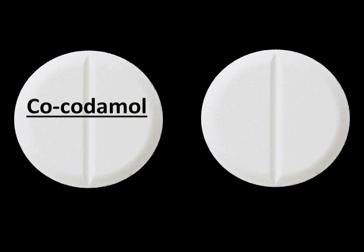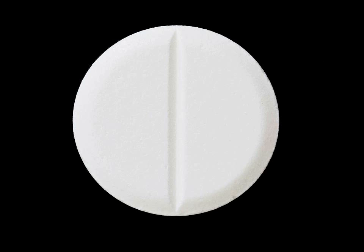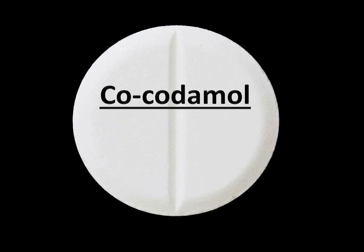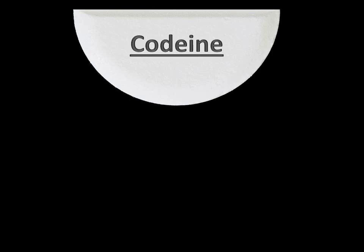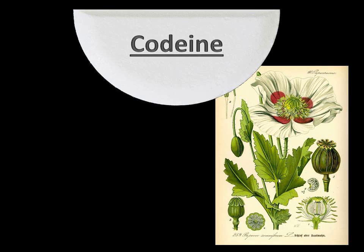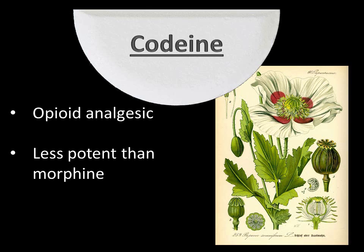The two drugs we're going to focus on are co-codamol and co-dydramol. Firstly, co-codamol is a combination of codeine and paracetamol. Codeine can be extracted from the opium poppy plant, so it's an opioid painkiller. It's less potent than morphine and is used to treat pain of mild to moderate severity.